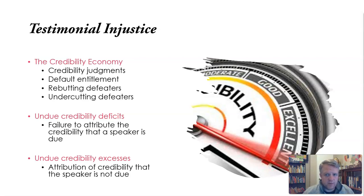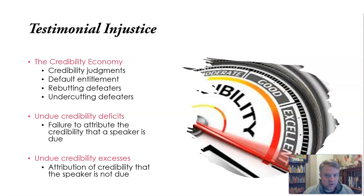But there are cases where we don't simply take people at their word. Sometimes we have what we'll call a defeater for someone's claims. Defeaters come in two types: rebutting defeaters and undercutting defeaters. A rebutting defeater is one that rebuts the content of the claim being made — when you have a rebutting defeater for someone's claim, you know or are fairly certain that the content of the claim is in fact false; you have some evidence that what they're saying is not true.